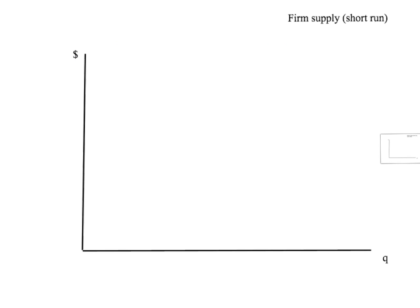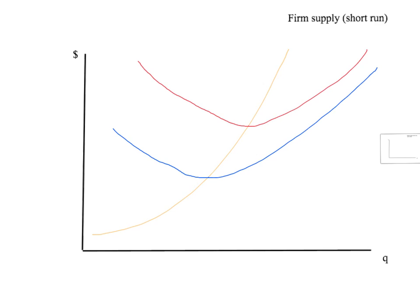Let's start off at the individual firm level. We've got little q, individual firm output on the horizontal axis, and dollars on the vertical axis. Let's draw on our marginal cost curve, our average total cost curve, and our average variable cost. So we've got marginal cost, average total cost — which is the red one — and average variable cost, which is the blue one.